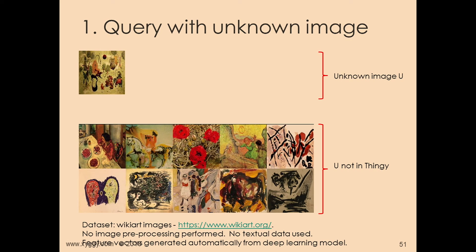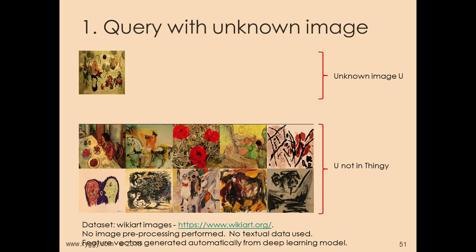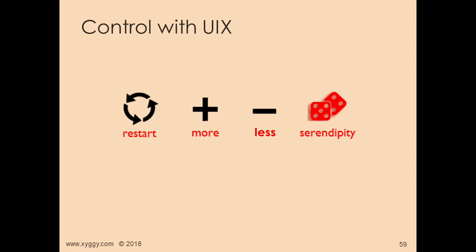I said at the beginning that consumers don't have control when they use recommendation engines right now — but now they can. The way you do it is to provide the relevant UX controls. Whether it's more or less, you can have engineered serendipity, restart, or use the APIs in inventive ways and create your own controls.